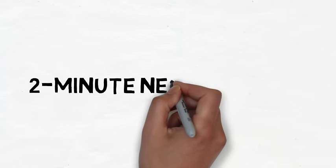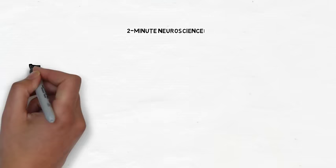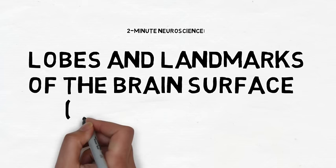Welcome to Two Minute Neuroscience, where I simplistically explain neuroscience topics in two minutes or less. In this installment, I will discuss the lobes of the brain and some major landmarks of the brain surface that can be seen from a lateral view.